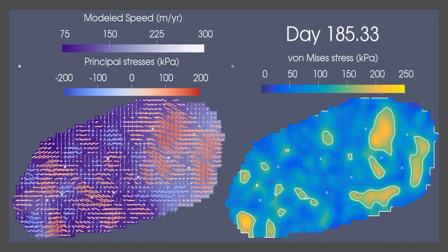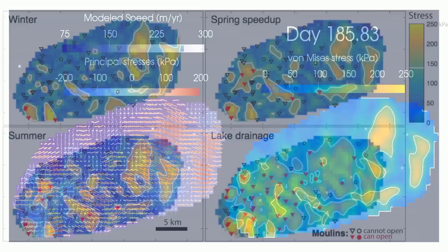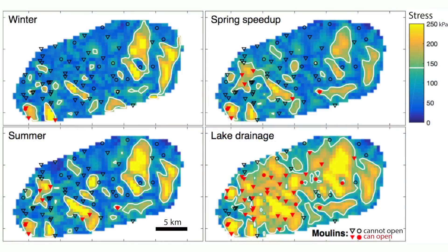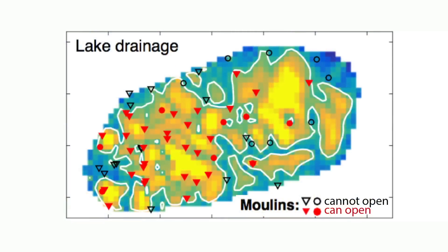We calculated these stresses through a computer model that was constrained to match observations of ice velocity using GPS receivers that we had placed on top of the ice sheet. We found that during winter, spring, and most of summer, the stresses at the surface were just insufficient to form the cracks or fractures that are the nucleus for a new moulin to form.